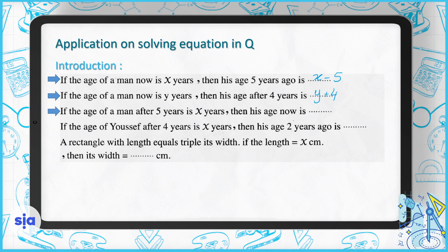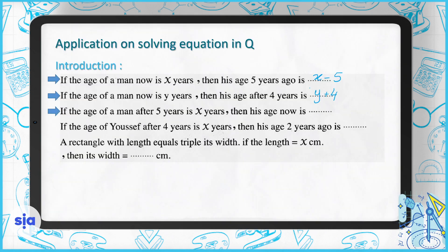The third one: if the age of a man after five years is X — remember this — then what is his age now? After five years it's X, so now we go back five years. It will be X minus five.